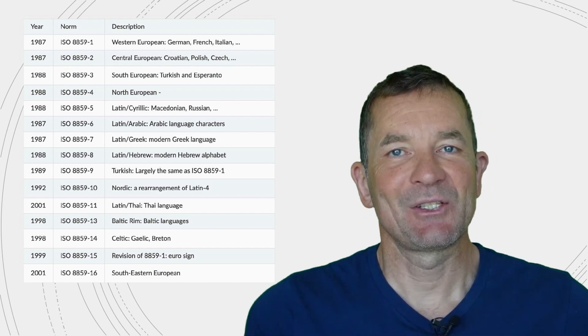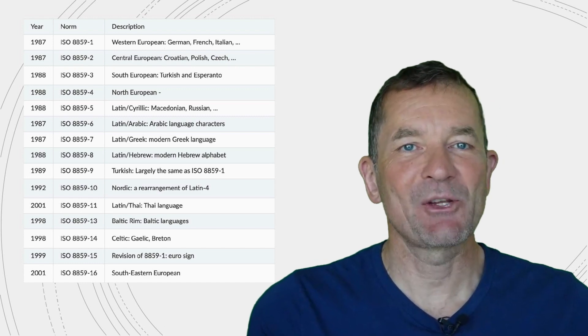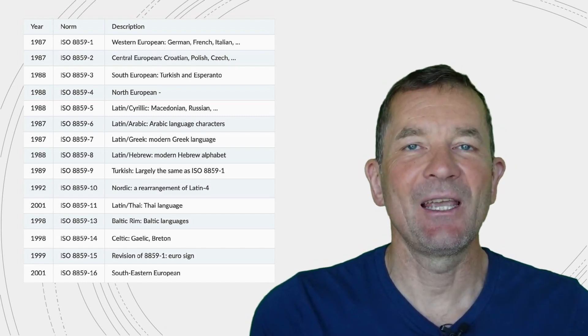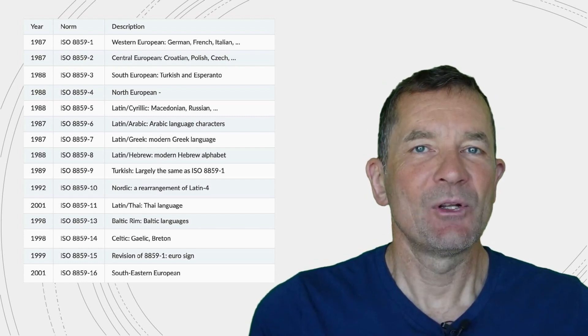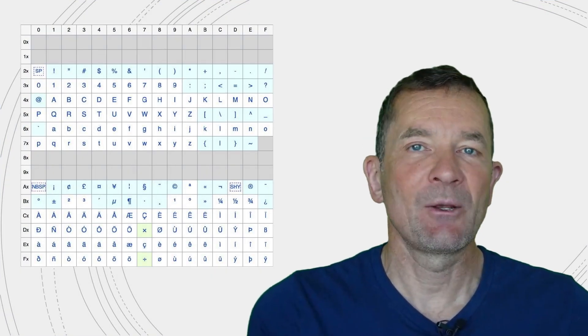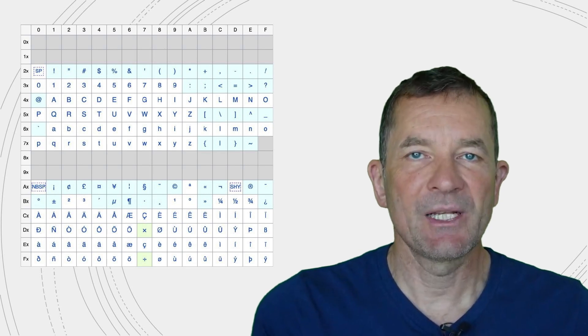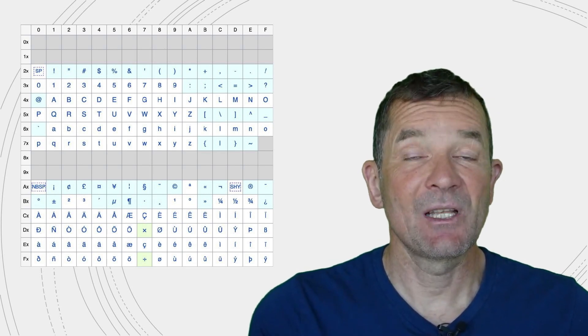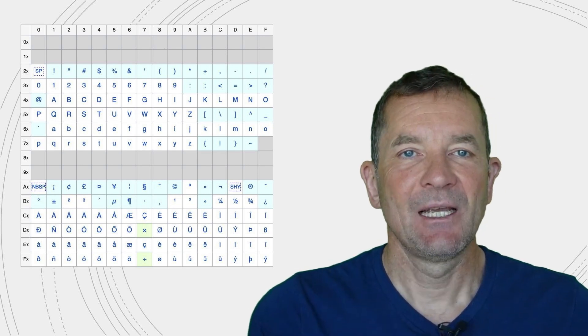The one that I'm familiar with, because that's representing German special characters, is ISO 8859-1, which has special characters for example for German, but also for Nordic languages and for French and some other languages that have special accented characters.